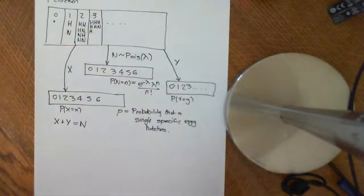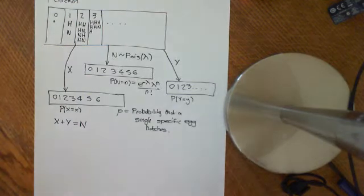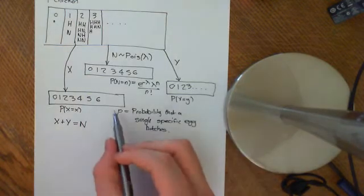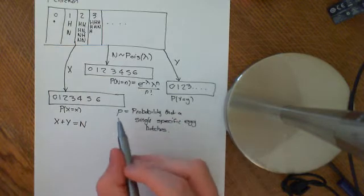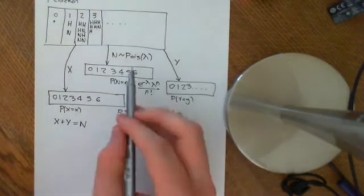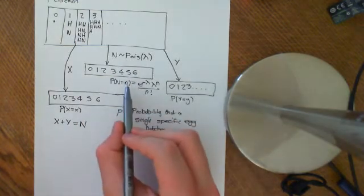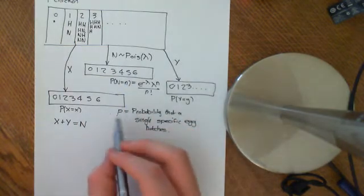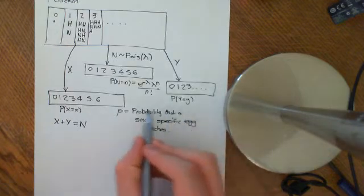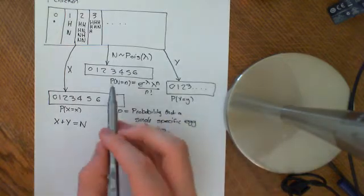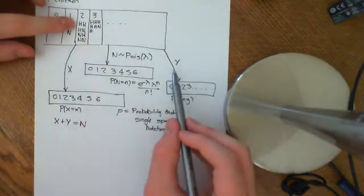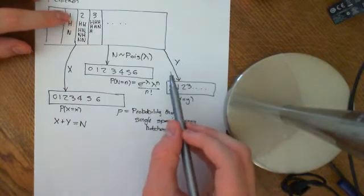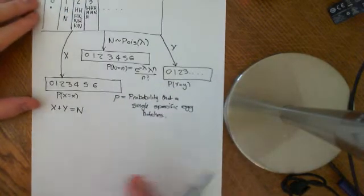We'll start off with X. We know some more information: if we know the number of eggs the chicken has laid, that tells us how the random variables X and Y will be distributed. Let me discuss that further.